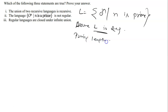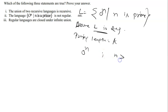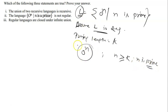If L is regular, then we have a pumping length — let's call it k. From this language, we take a string 0^n such that n is greater than or equal to k, and n is prime. So this string w belongs to language L, and the length of w is greater than or equal to the pumping length.